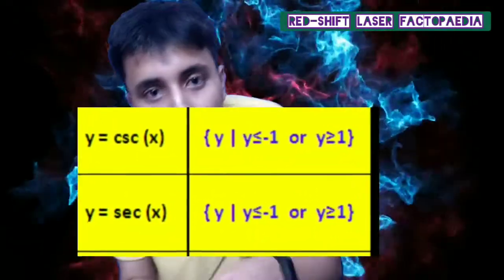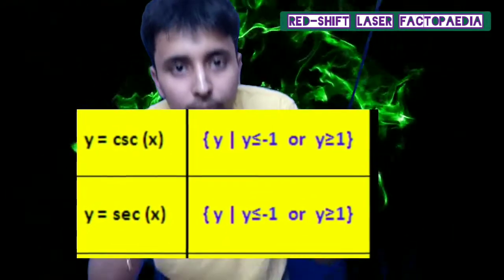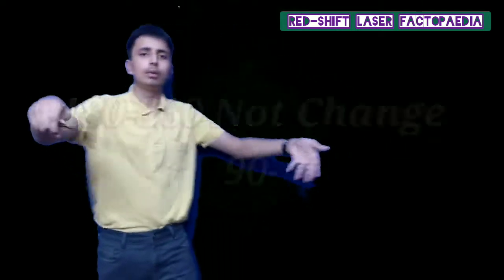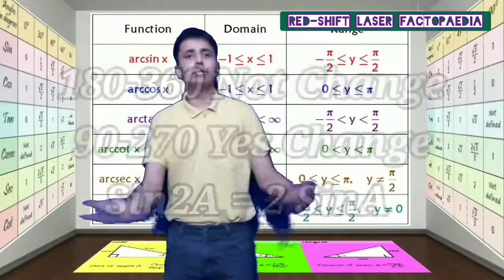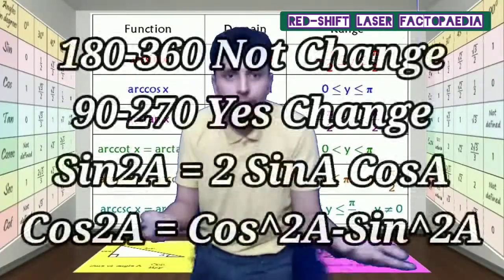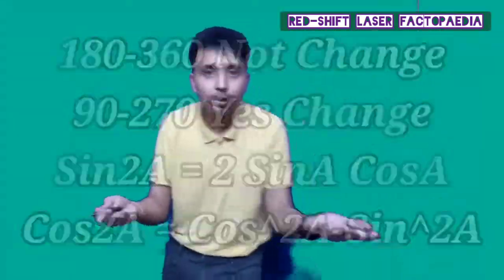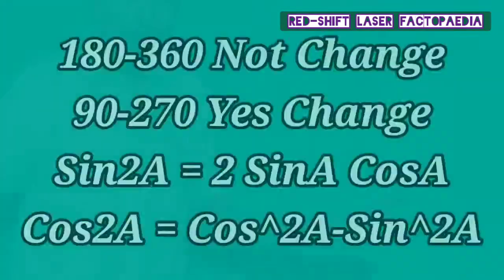Because I'm done with some stuff, I'll complete it. Here is the inverse, the inverse is over. The same 180, 360 degrees, it's not a change, but 90 to 90 degrees, it's a change. Sin 2a equals sin a cos a, cos 2a equals cos square a minus sin square a.